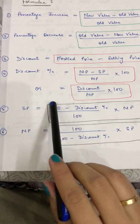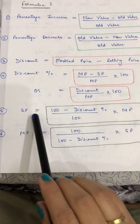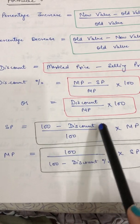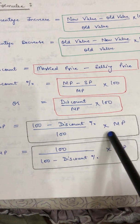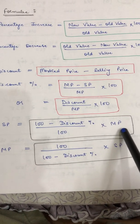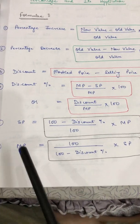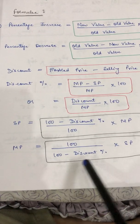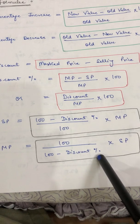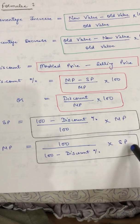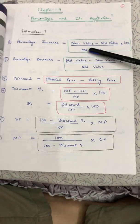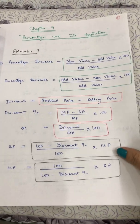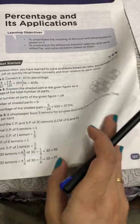The next formula is how to find selling price (SP): SP equals 100 minus discount percent, divided by 100, multiplied by mark price. Similarly, mark price equals 100 divided by (100 minus discount percent), multiplied by SP, that is selling price. These are the formulas we will use in Exercise 9.1. Let's start with the first question.